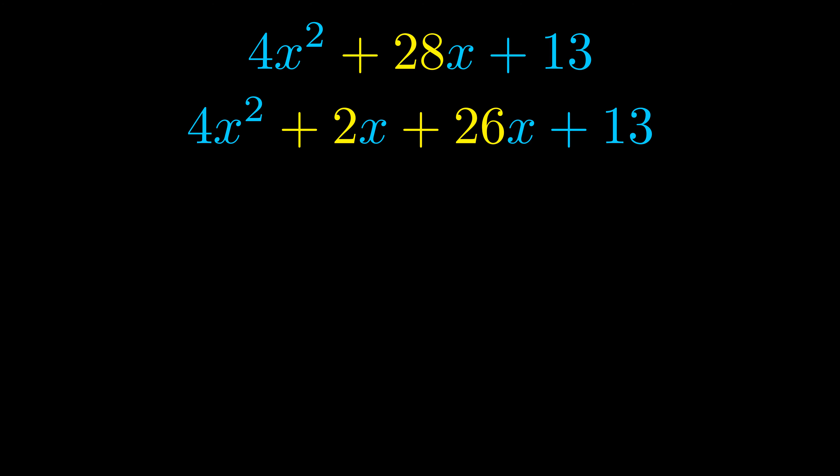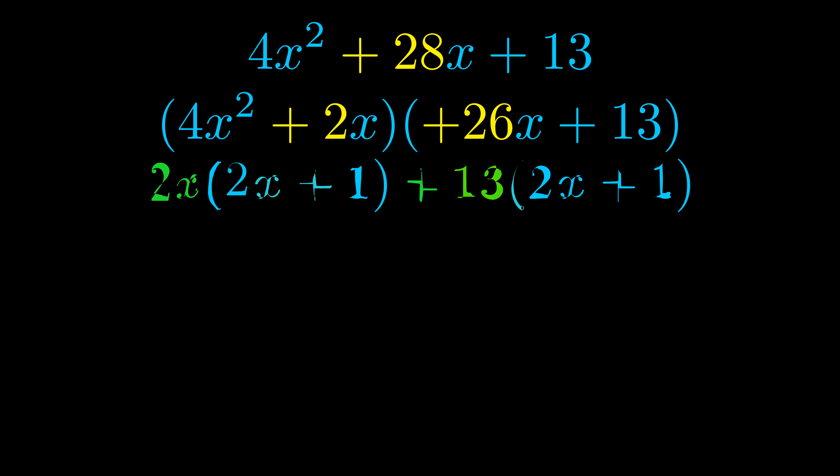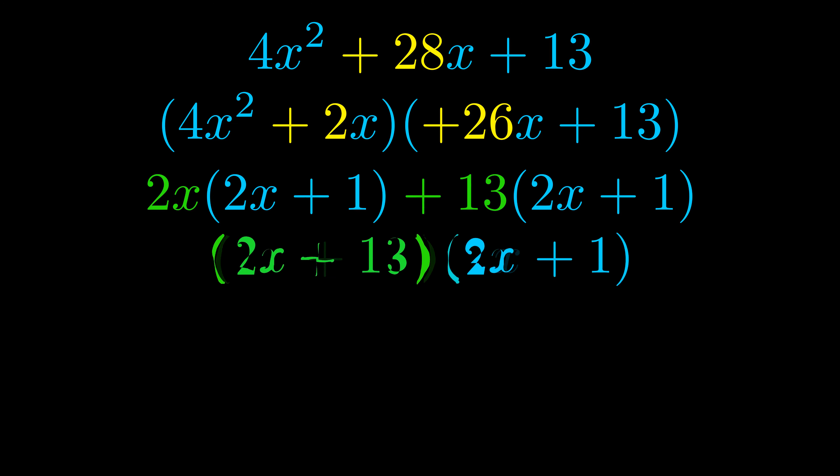Once we've done this we go ahead and put parentheses around the first term and the last term, and we do that so that we can take the greatest common factor out of both terms. We can see the greatest common factor is now outside in green. Notice also how what remains inside of the parentheses is the same in both cases. The blue values are the same.